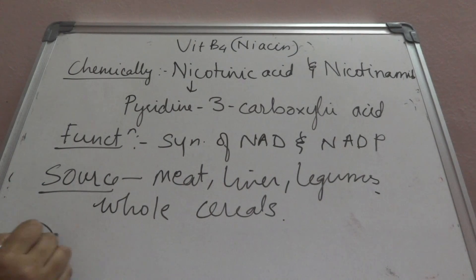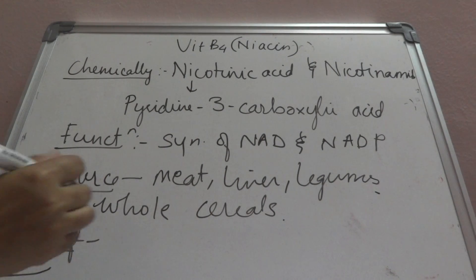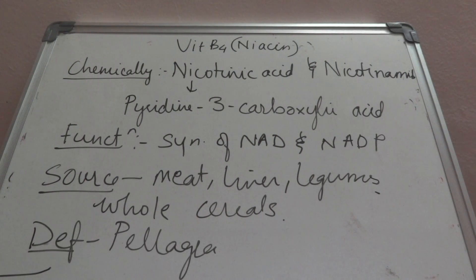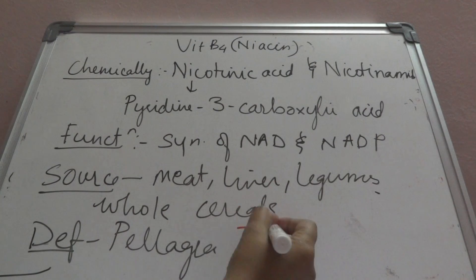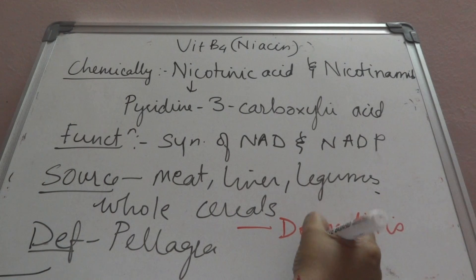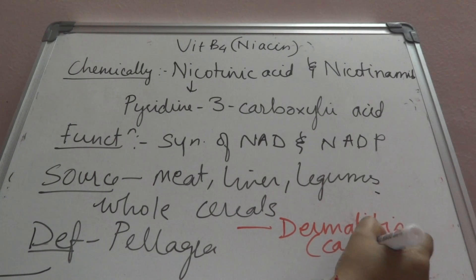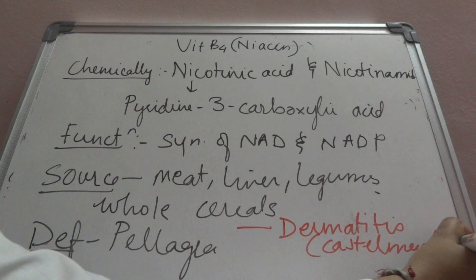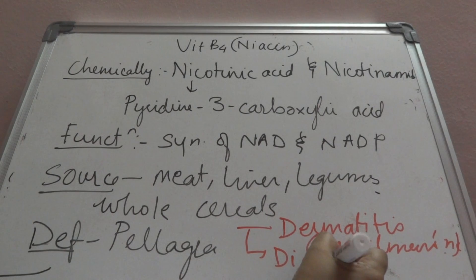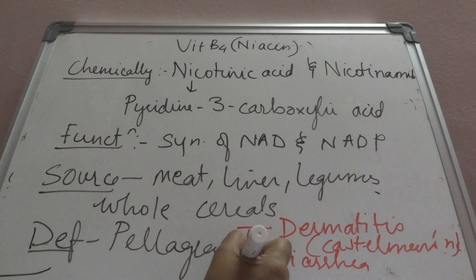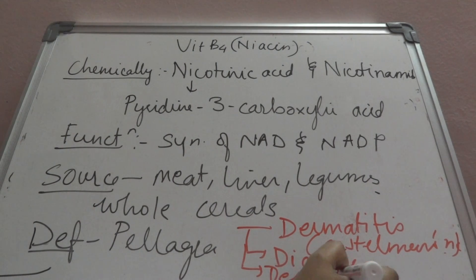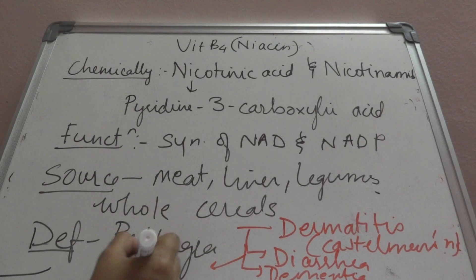The deficiency of niacin is called pellagra, which leads to 4 D's: dermatitis in the form of Casal's necklace, diarrhea, dementia, and finally it may lead to death.